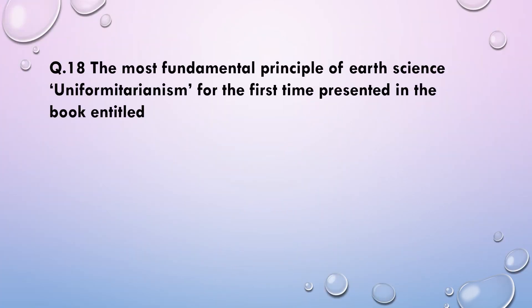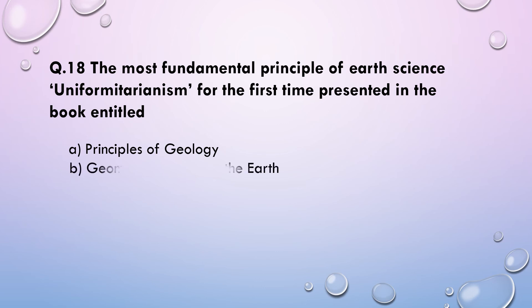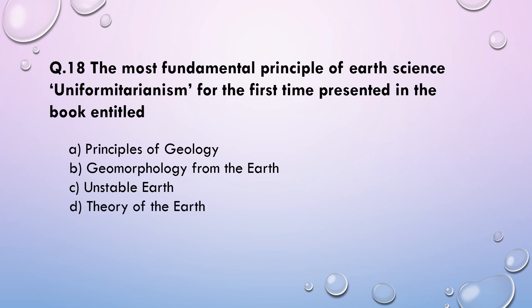Next question: The most fundamental principle of earth science — uniformitarianism — was for the first time presented in which book? (a) Principles of Geology, (b) Geomorphology from the Earth, (c) The Unstable Earth, or (d) Theory of the Earth. The correct answer is Principles of Geology.